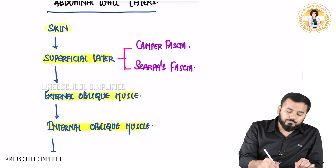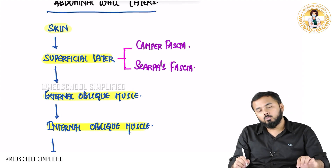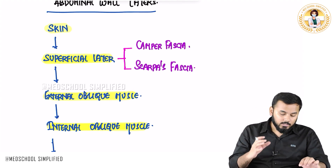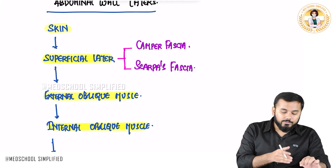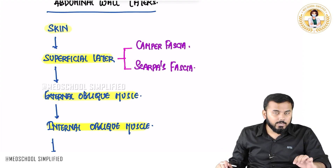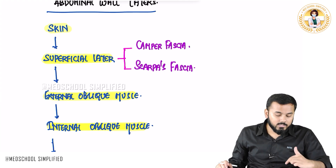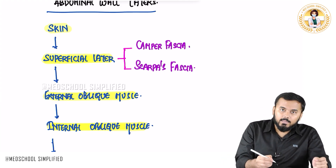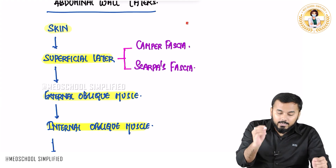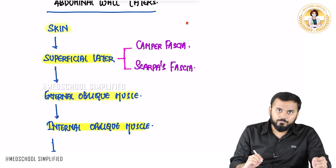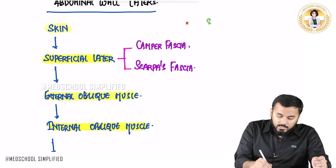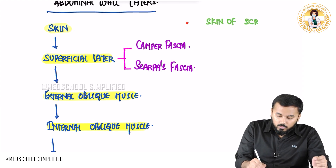Now when you go down into the scrotal region, these abdominal wall layers are continuing down there. For example, the skin in the abdomen continues as the skin of the scrotum.